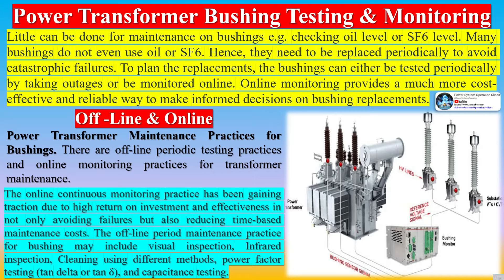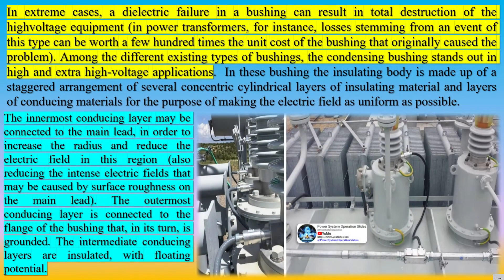The method of detecting bushing insulation deterioration is well understood, and traditionally offline tests have been performed for power transformer bushing testing and monitoring. Little can be done for maintenance on bushings — for example, checking oil level or SF6 level. Many bushings do not even use oil or SF6, hence they need to be replaced periodically to avoid catastrophic failures.